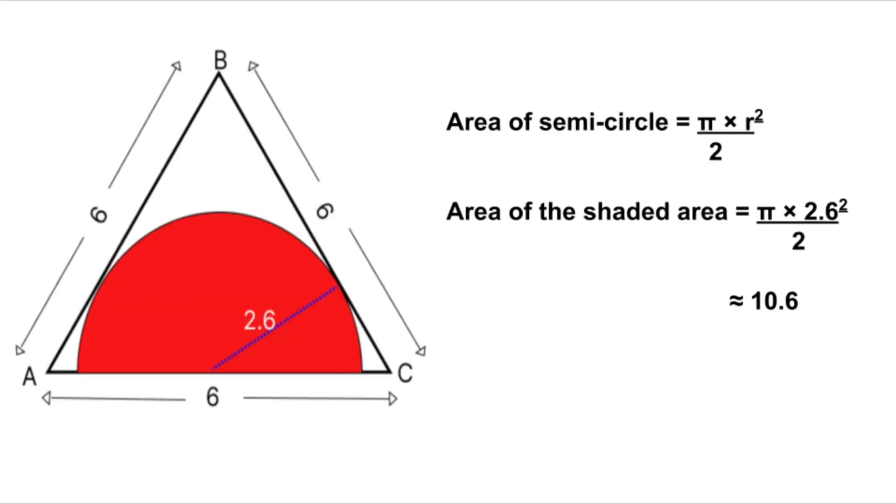Now the fun part. Let's use what we've found. We're trying to find the area of the shaded semicircle inside the triangle. The formula for the area of a semicircle is one-half times pi times radius squared. Let's plug in our radius, which we just found to be 2.6. Area is equal to one-half times pi times 2.6 squared. That's about 10.6 square units. And that's the shaded area we were looking for, sitting neatly inside our equilateral triangle.